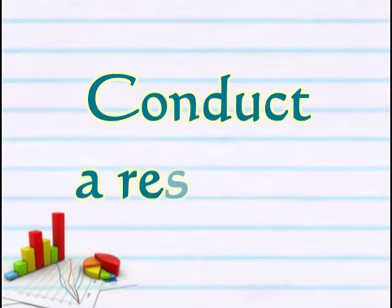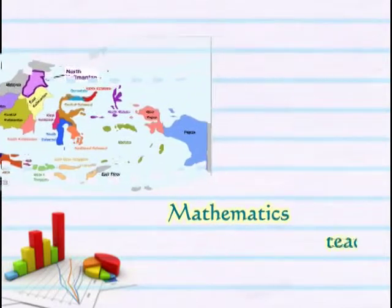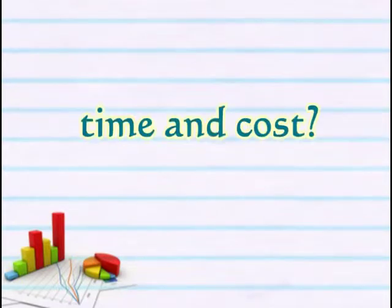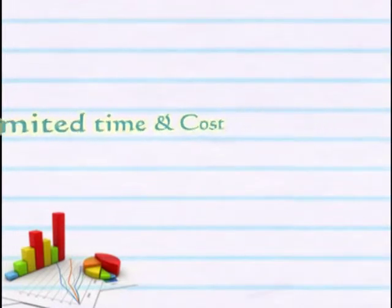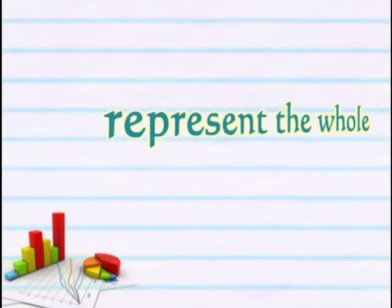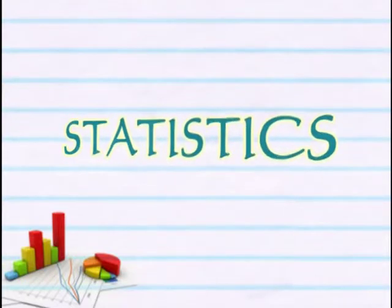And how do we differentiate valid value from flawed claims? For example, when we would like to conduct research about Indonesian student perception towards the mathematics teaching and learning process, should we ask all of the students in Indonesia? Are your time and cost enough to conduct the research? How could we conduct the research with limited time and cost, but still represent the whole?